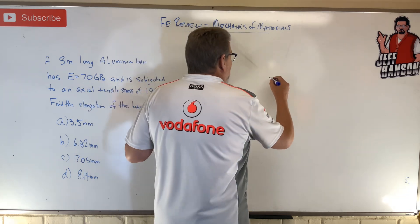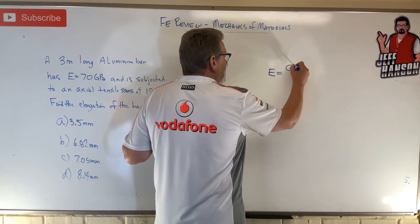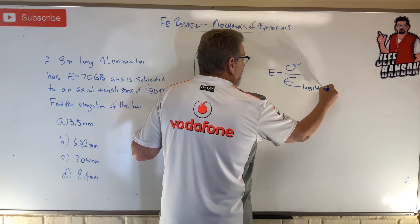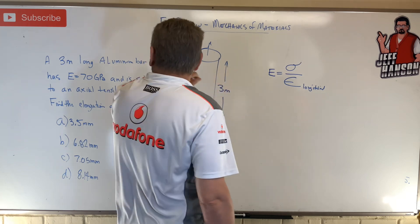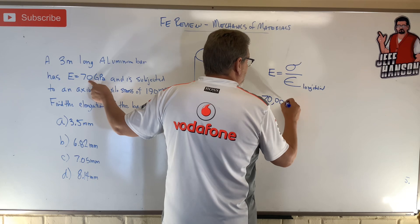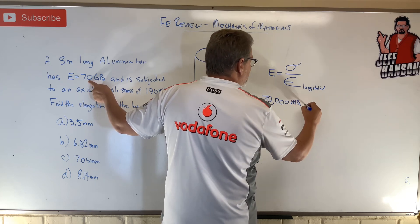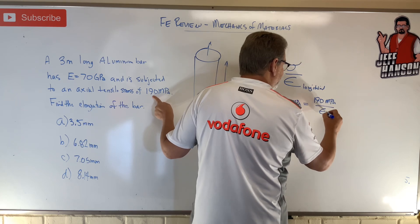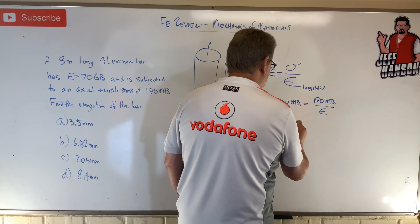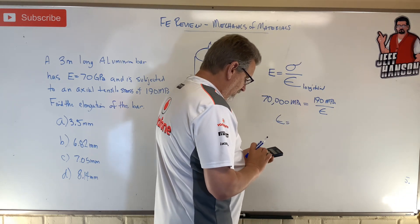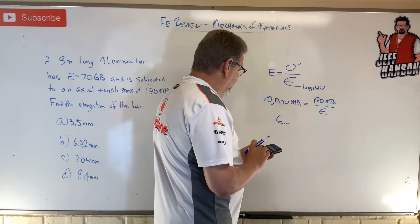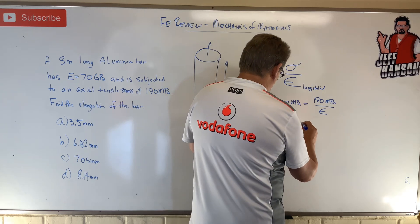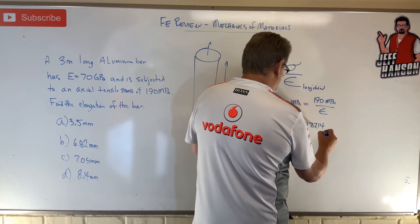The strain method: E equals stress over strain — that's longitudinal strain. E, do we know that? Yes, right there — 70 gigapascals, which is 70,000 megapascals. That equals 190 megapascals divided by strain. Move strain to the other side and divide, so strain equals 190 divided by 70,000, which equals 0.002714.